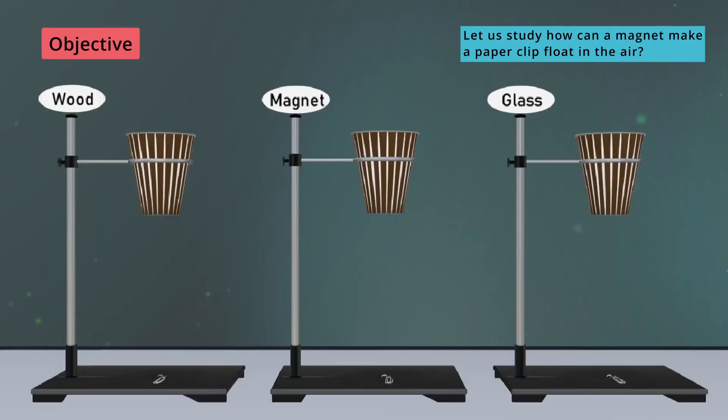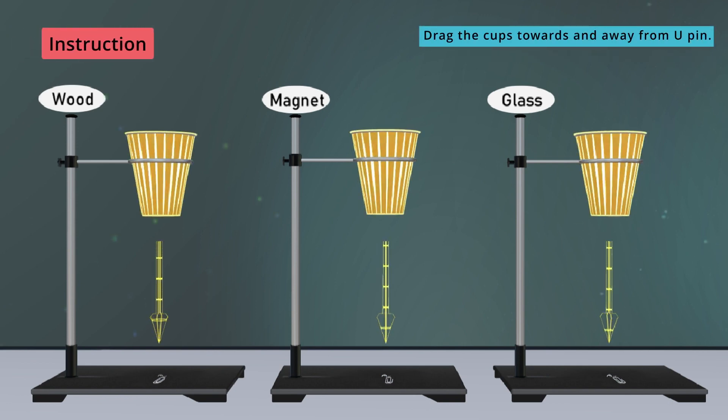Let us study, how can a magnet make a paper clip float in the air? Drag the cups towards and away from U-Pin.